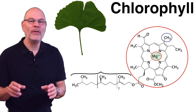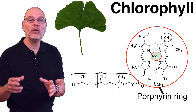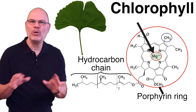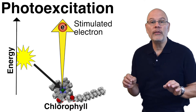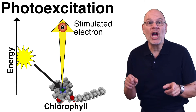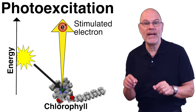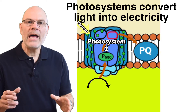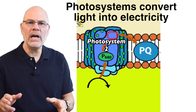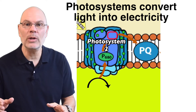Like phospholipids, chlorophyll has a head and a tail. The head consists of a nitrogen-rich structure called a porphyrin ring with a magnesium atom at its center. The tail is a hydrocarbon chain. Because of this structure, chlorophyll can be stimulated by light — this is called photoexcitation. When light shines upon chlorophyll, it stimulates the electrons in the magnesium atom to jump to a higher energy level. In the thylakoid membrane, chlorophyll molecules are organized into photosystems that convert light into electricity.